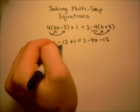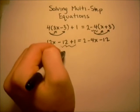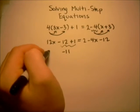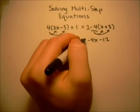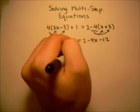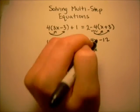Next thing will be to combine like terms on each side. So here, we've got negative 12 plus 1, that gives us negative 11. So we have 12x minus 11 on this side. And here we have a positive 2 and a minus 12, that gives us a negative 10, and then we still have this minus 4x.